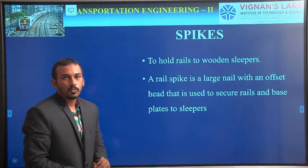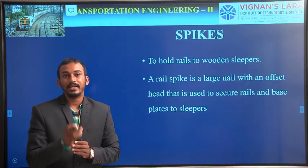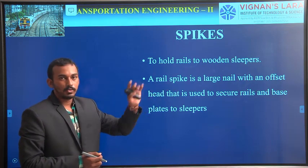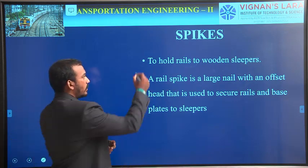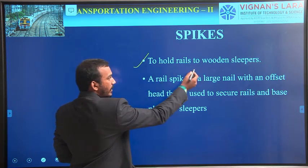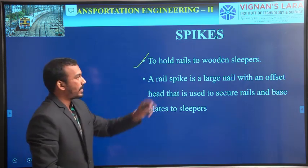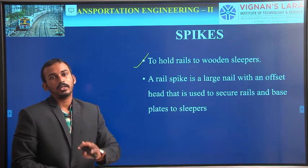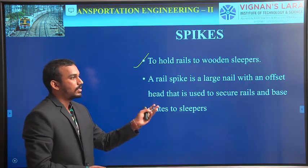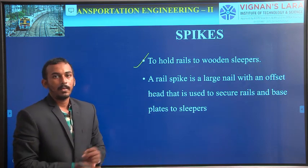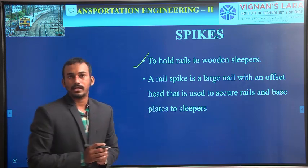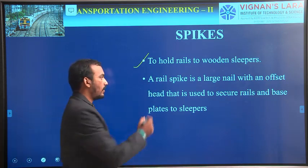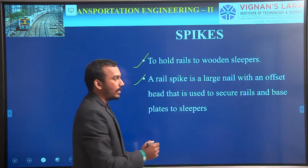Coming to the spikes. What is a spike? A spike is nothing but a nail which is used to connect rails to the wooden sleepers. These are mainly used to hold rails to the wooden sleepers. Spikes are generally used for wooden sleepers, but some types of spikes can also be used for other types of sleepers — that is steel sleepers and concrete sleepers. A rail spike is a large nail.